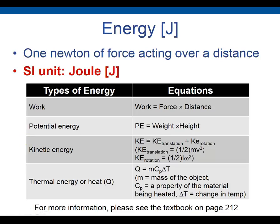Energy is force times distance. Exerting a force over a certain distance is work, and work equals energy. Potential energy is weight times height — for example, lifting a chair. Kinetic energy involves motion, and there is also thermal energy. We have four types: work energy, potential energy, kinetic energy, and thermal energy.